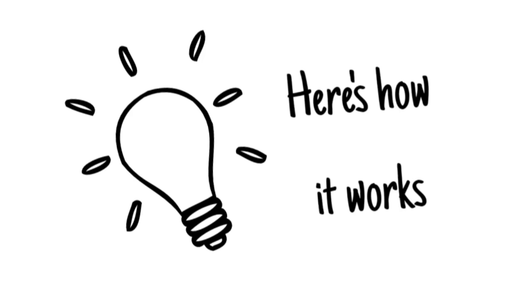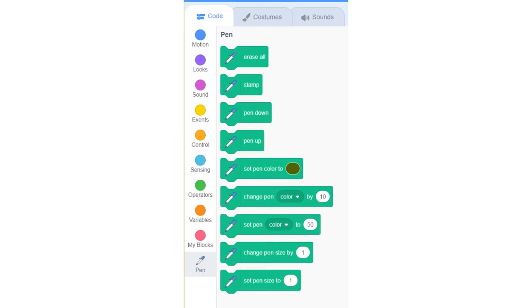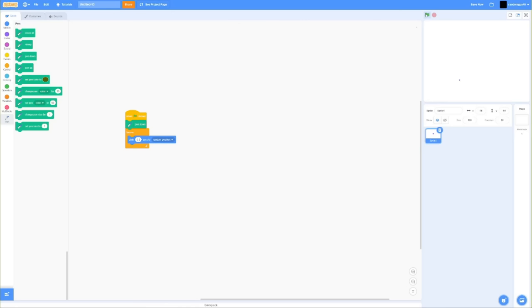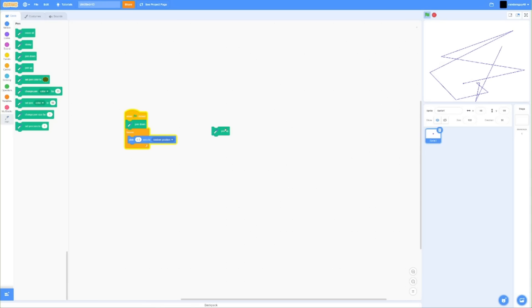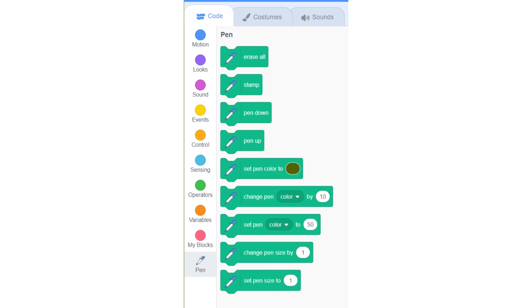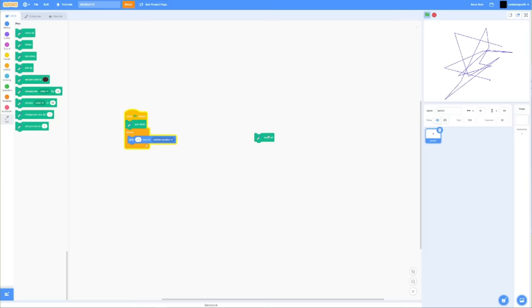Here's how the pen works. You can use the pen down block to make a sprite leave a trail when it moves. You can then use the pen up block to stop drawing a trail. The pen tool also has blocks to let you change the pen's properties, such as its thickness or color. You can then use the erase all block to erase all the pen on the screen.